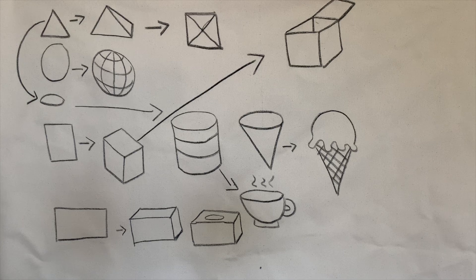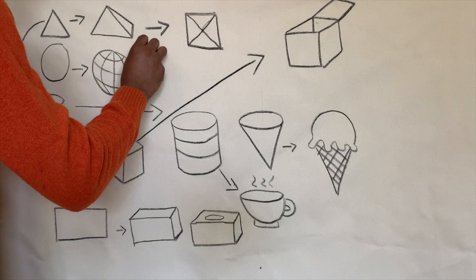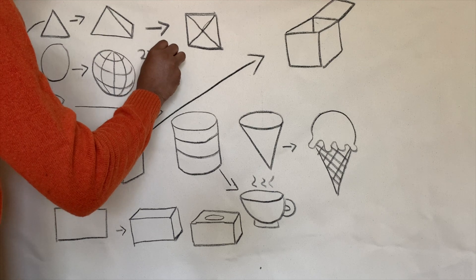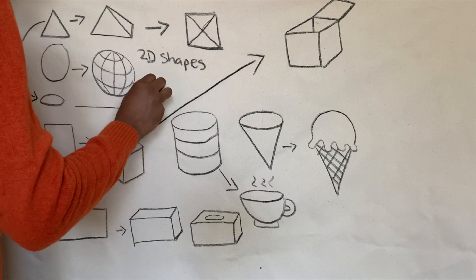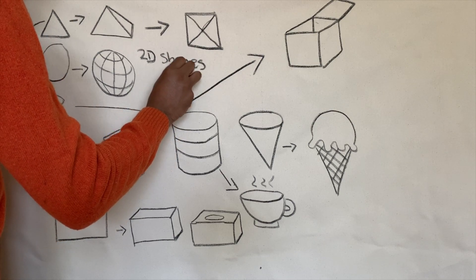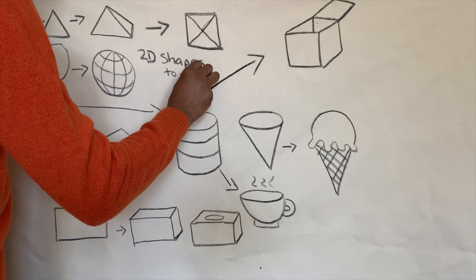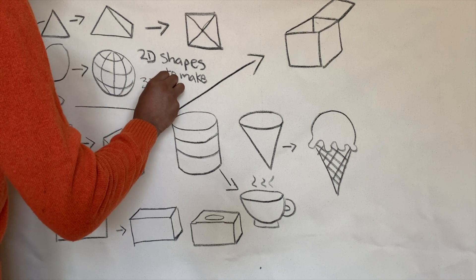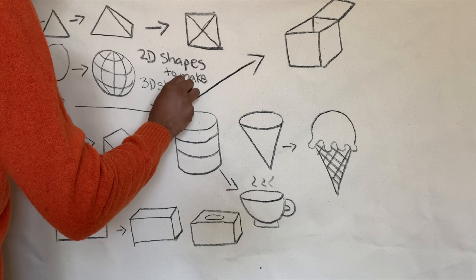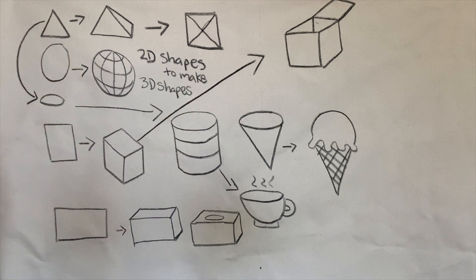So, practice drawing your shapes. 2D shapes to make 3D shapes. Look at things in your house and try to draw them. Whether it be a book, a laptop, cups, plates. Also, and even chairs.